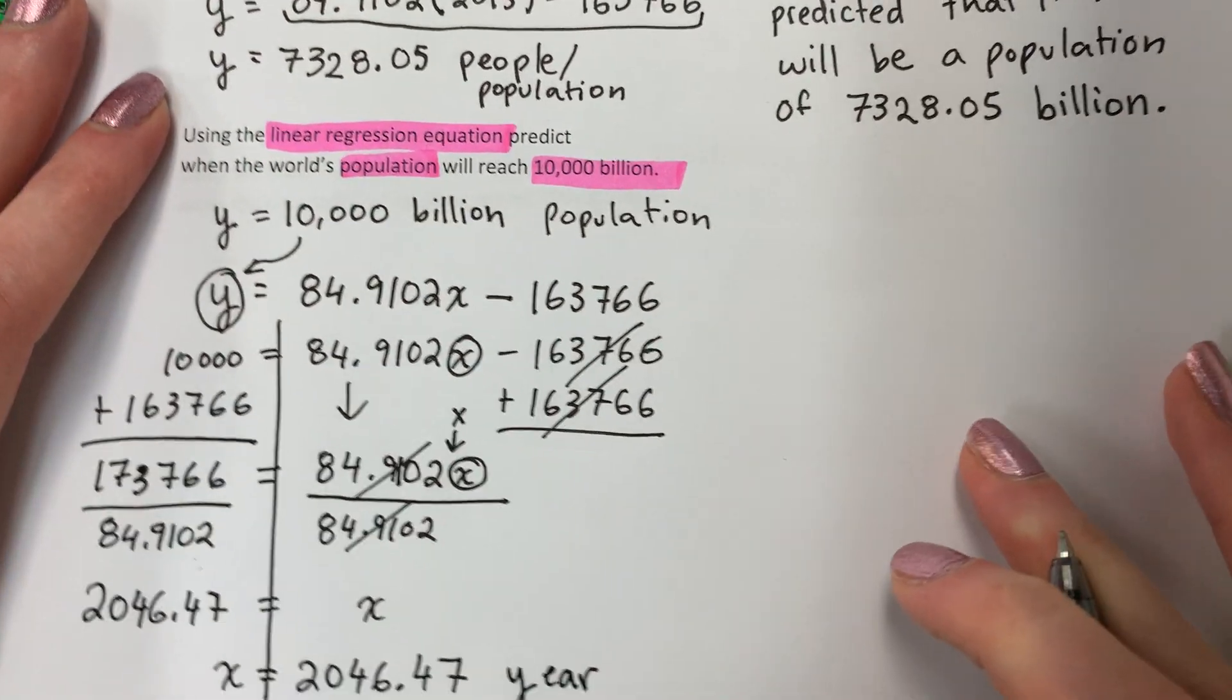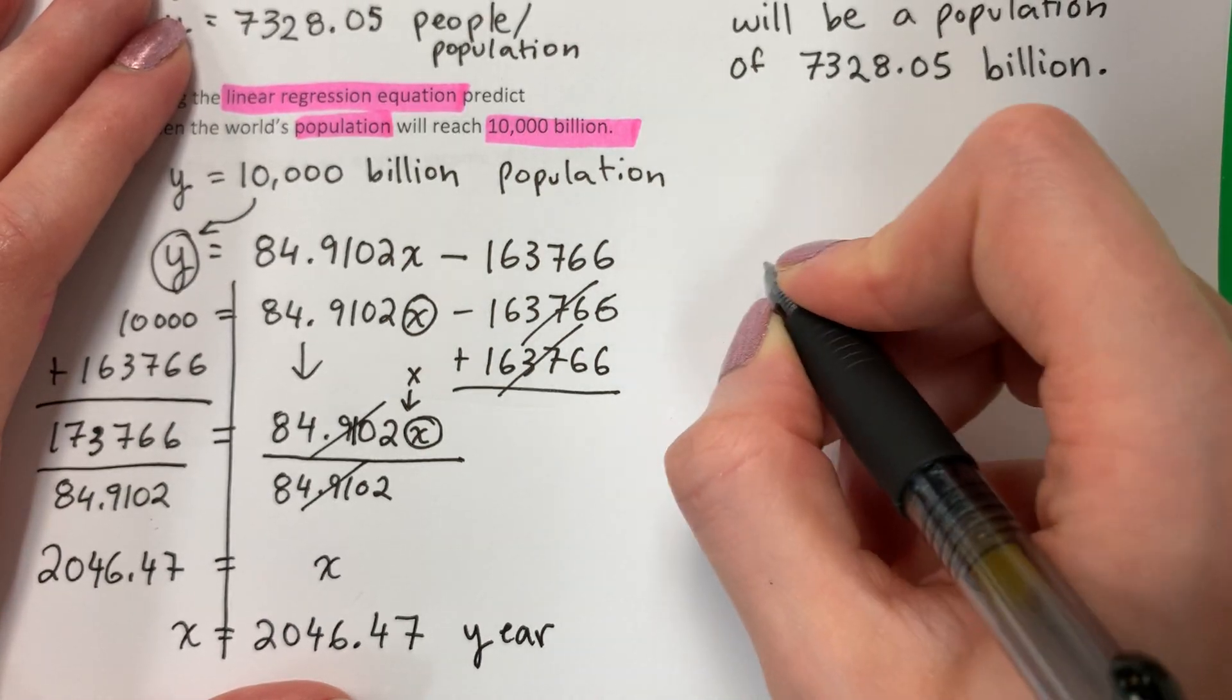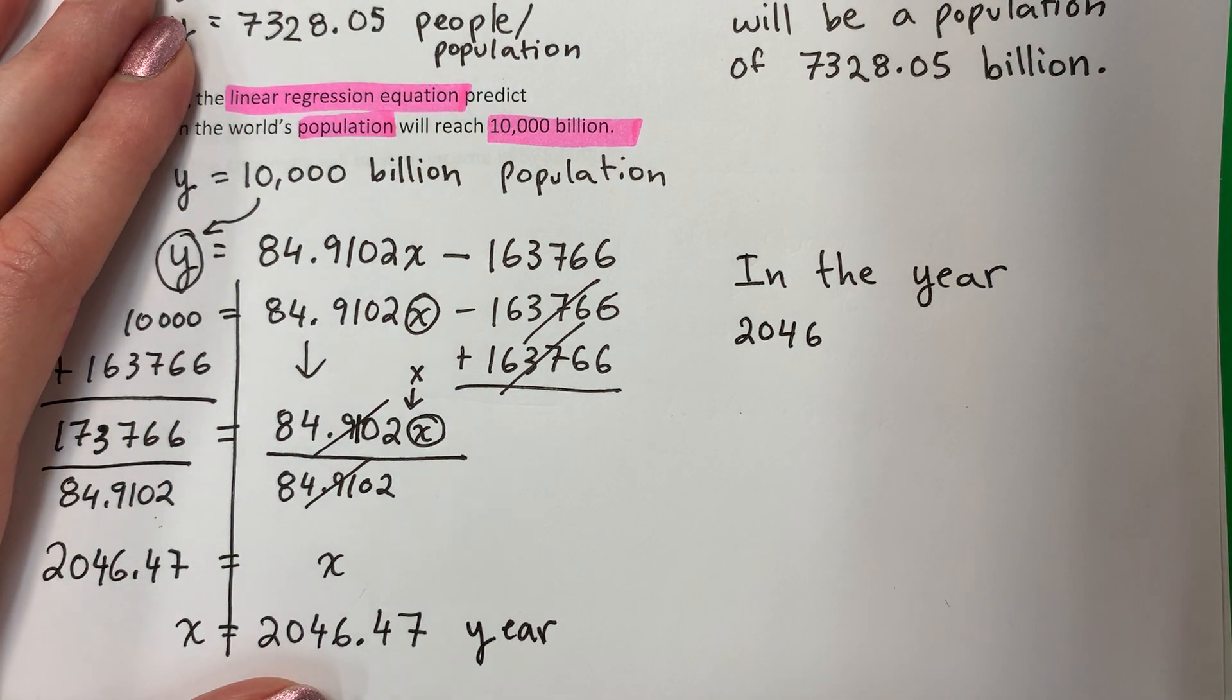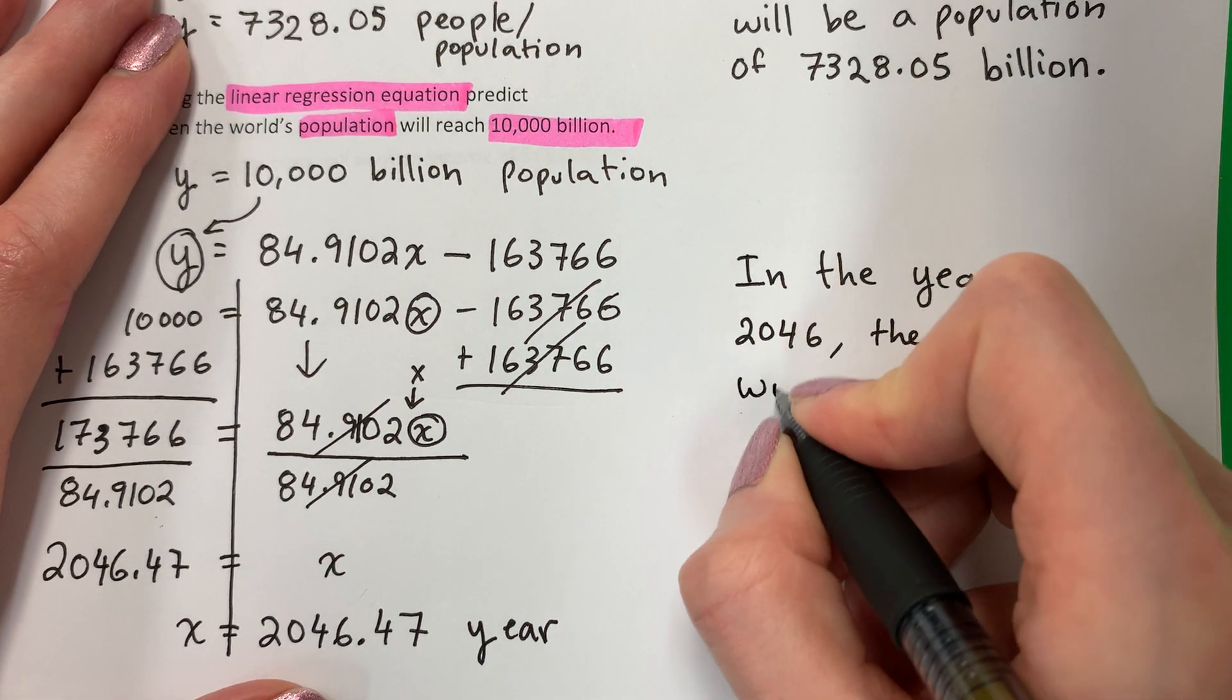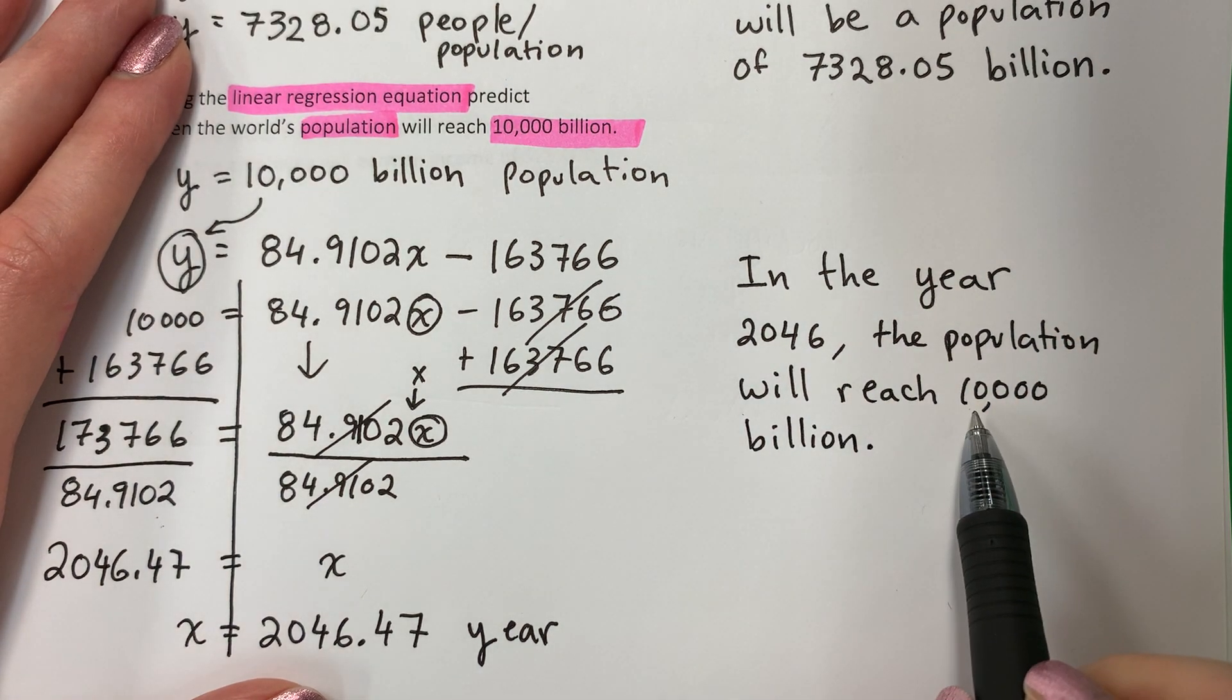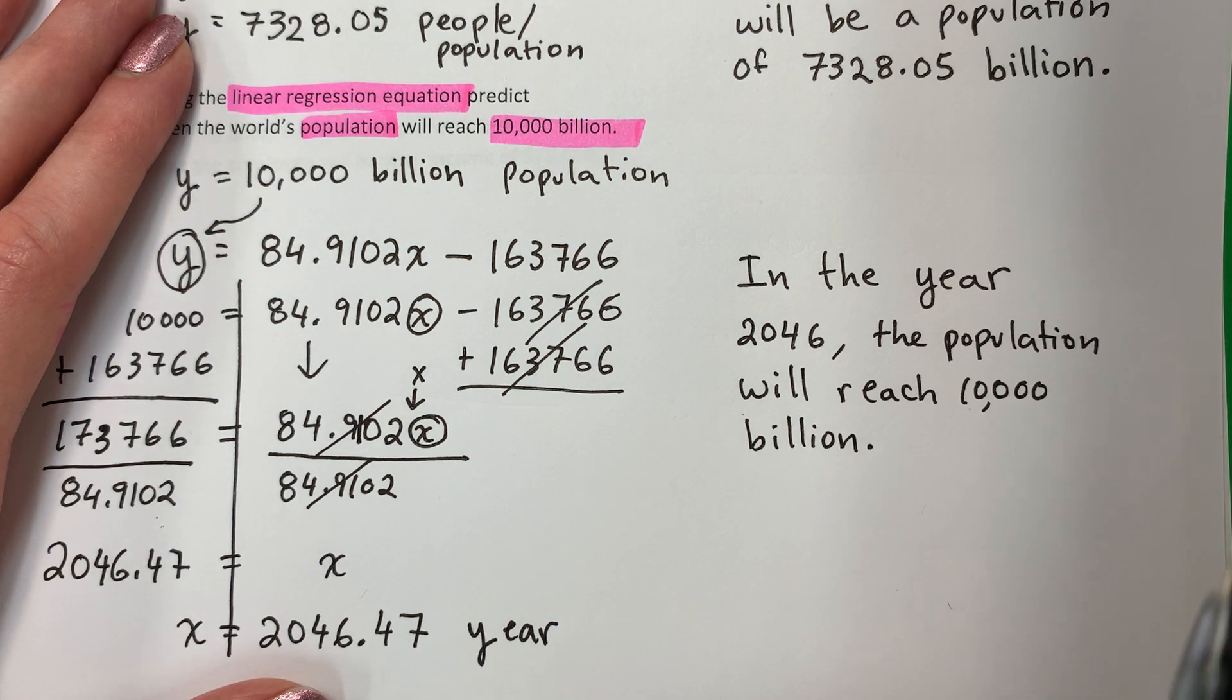Let's go ahead and answer the question. So the question was, when, when will the population be 10,000? So we'll write, in the year 2046, in el año 2046, the population will reach 10,000. Billion. So 10,000 billion will be in 2046. En el año 2046, va a ser, ser a 10,000, billones de personas.